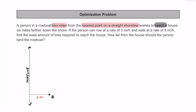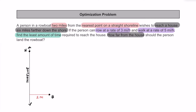This person in the boat wants to go ahead and reach a house that's going to be six miles further down this shoreline. I'm going to put a point over here and call this H for the house. This person can row at a rate of three miles per hour, and they can also walk at a rate of five miles per hour. Our job is going to be to use this combination of rowing and walking to find the least amount of time required to reach the house. So we want to minimize the amount of time it's going to take for this person to reach the house. The question is: how far from the house should the person land the rowboat — when should they take that boat, land it on shore, and then do the walking the rest of the way?